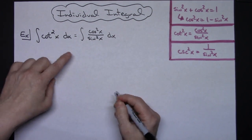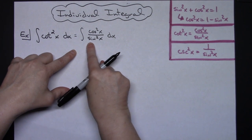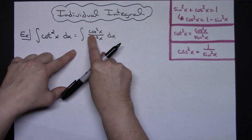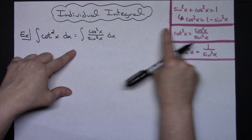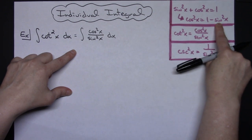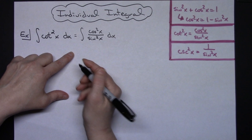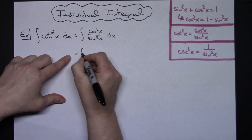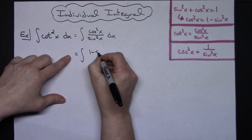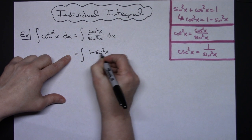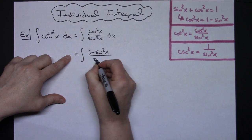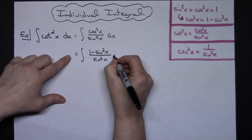And then the next thing I am going to do is I'm going to take a look at that numerator right there. Cosine squared x and I'm going to choose to substitute 1 minus sine squared x in the numerator. So I'll have a 1 minus sine squared x all over a sine squared x dx.